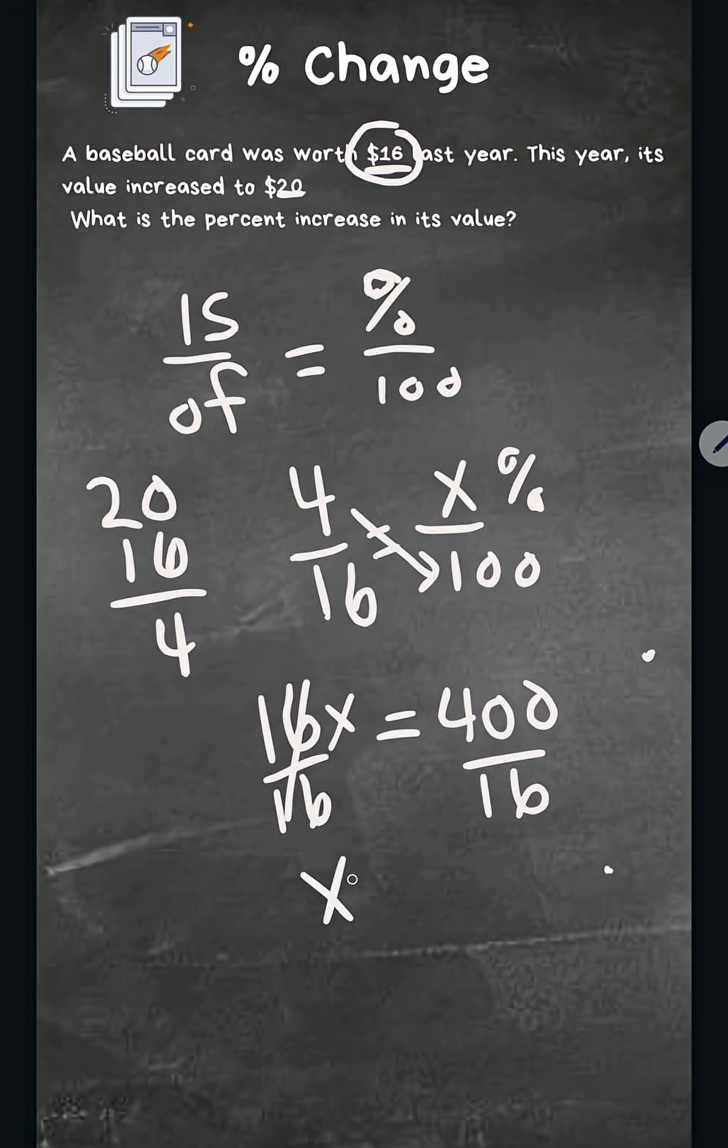These cancel, bring down the x, and 400 divided by 16 is 25. So let's put it back in the original fraction over here. It's 25 percent.